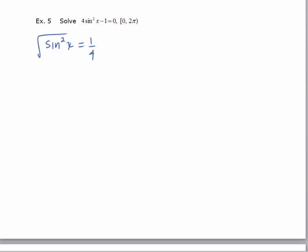Taking the square root of each side, I need to remember to put the plus or minus. This generates two solutions. Sine x equals 1 half, and sine x equals negative 1 half.